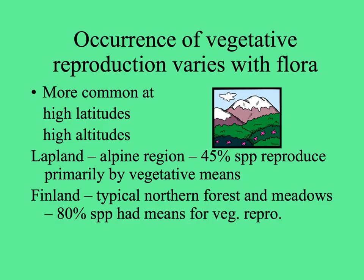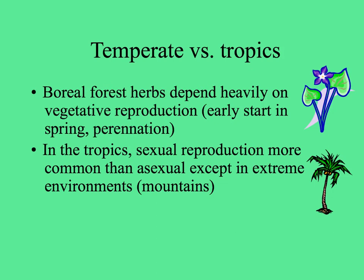In general, vegetative reproduction is more common at high latitudes and temperate areas closer to the poles, and at high altitudes. In Lapland, with a large alpine region, 45% of species reproduce primarily by vegetative means. In Finland, 80% of species had the capability for vegetative reproduction. Boreal forest herbs depend very heavily on vegetative reproduction — with bulbs, corms, rhizomes, and other adaptations — to sprout early and grow before the canopy above fills in and shades them out.